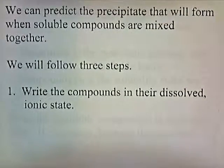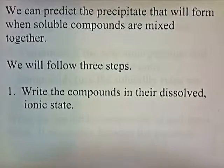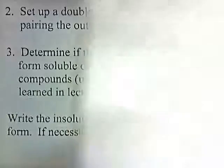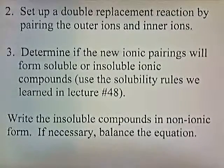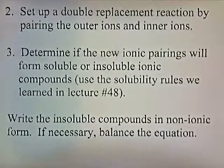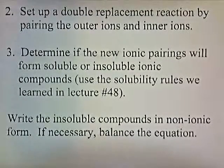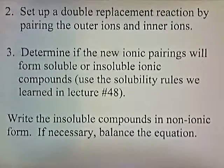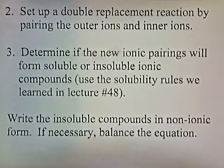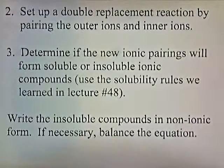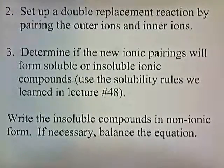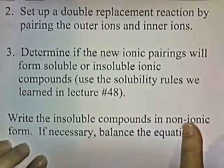We can actually predict the precipitate that will form when two soluble compounds are mixed together. We'll follow three steps: write the compounds in their dissolved ionic state; set up a double replacement reaction by pairing the outer ions and the inner ions; determine if the new ionic pairings will form soluble or insoluble ionic compounds using the solubility rules from lecture 48; and write the insoluble compounds in non-ionic form. If necessary, balance the equations.